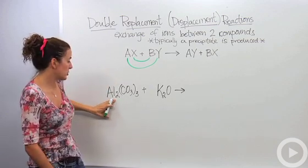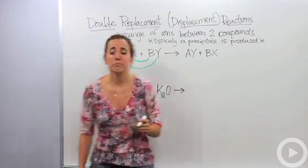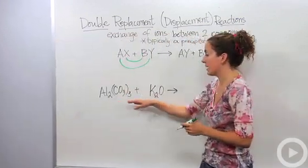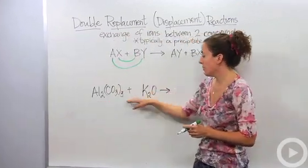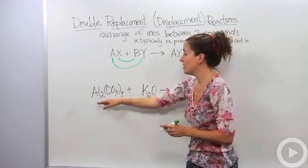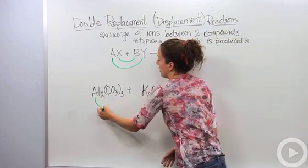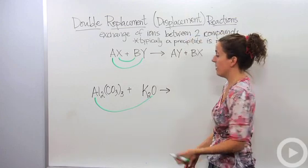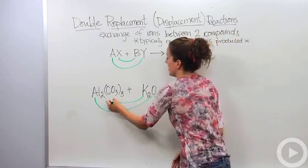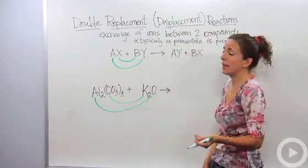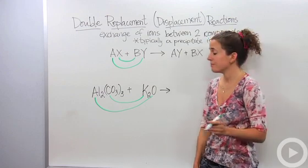So let's look at an actual double displacement reaction. We have two ionic compounds that come together, aluminum carbonate and potassium oxide. And what they're going to do, the metal is now going to bond with this non-metal, and this metal is going to go with that non-metal. Polyatomic ions are going to act as non-metals.